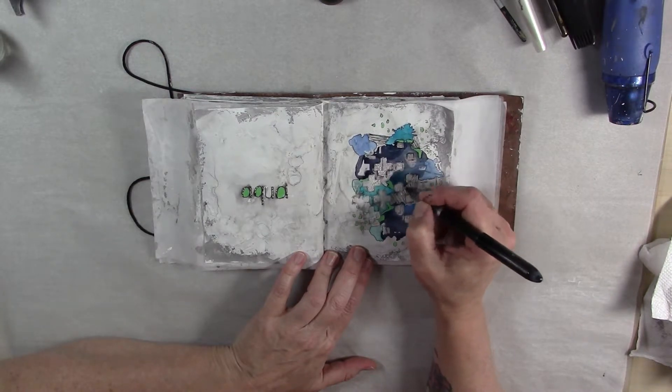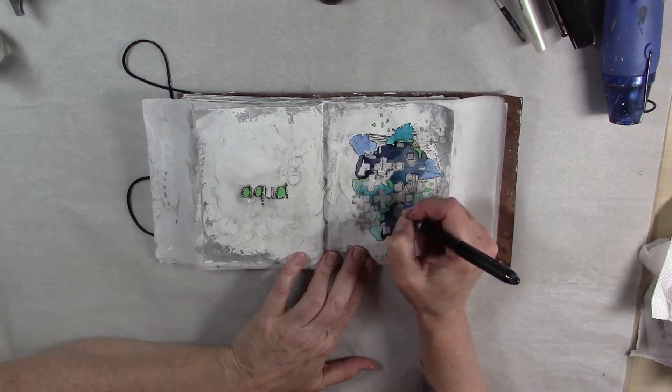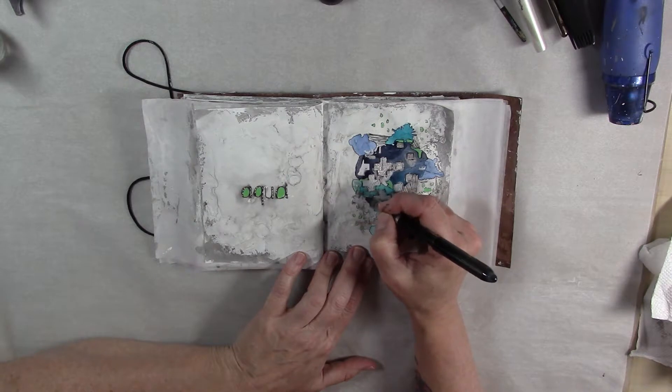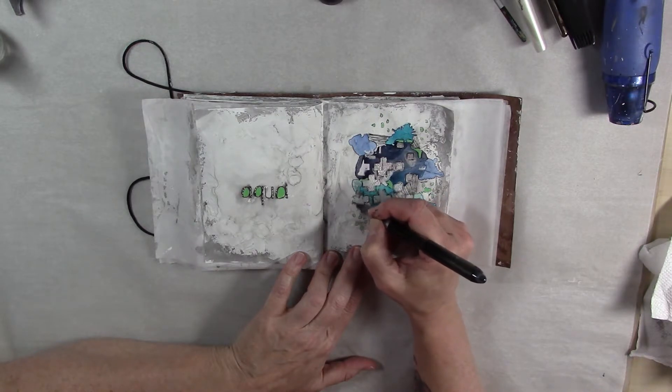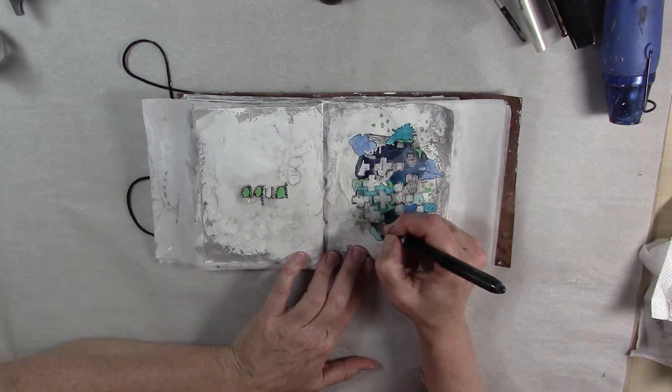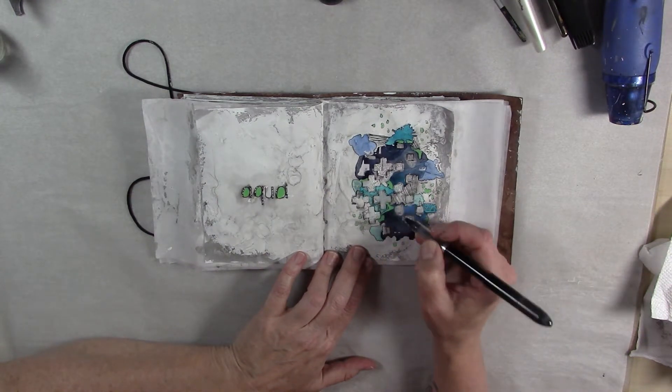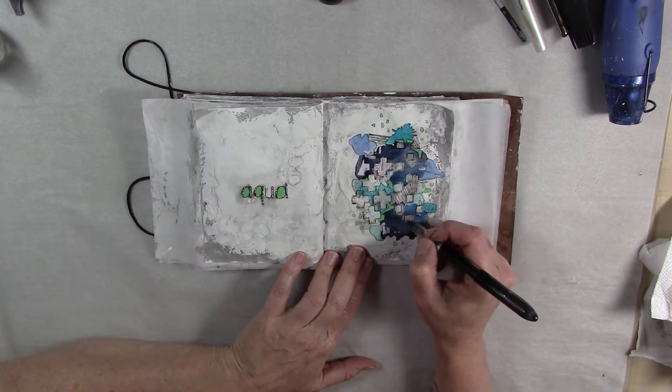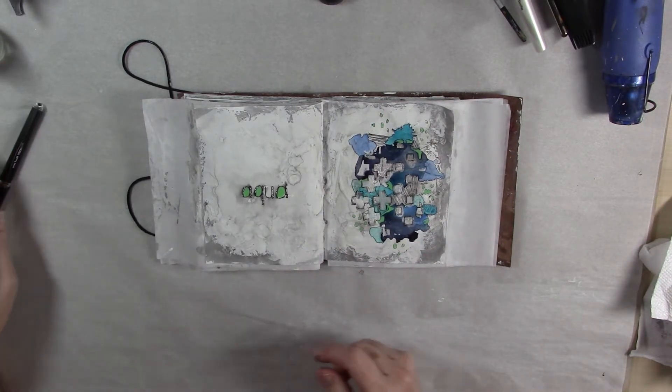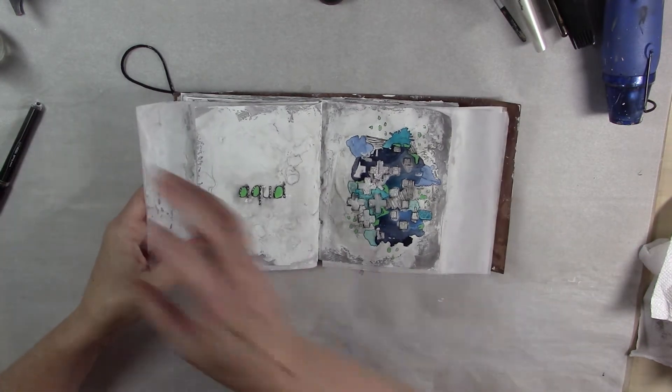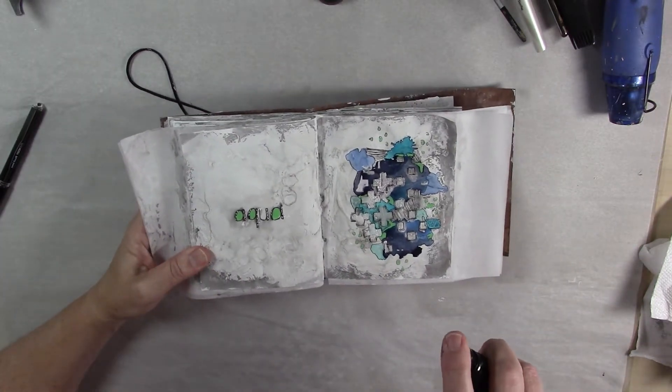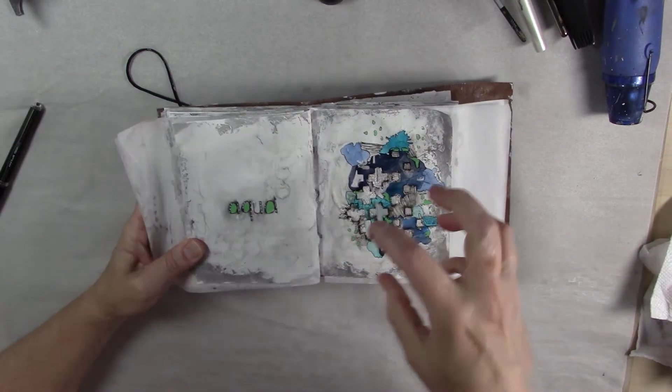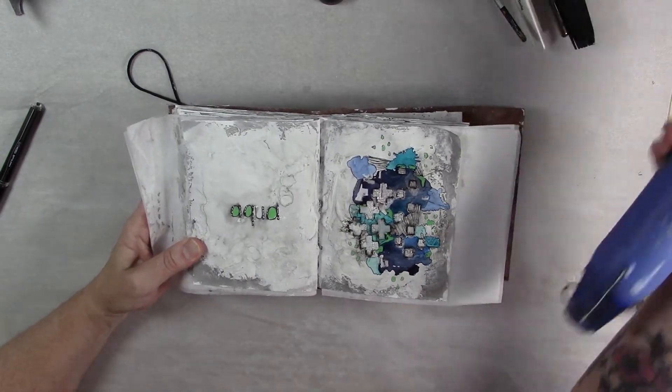And again, just being super loose, super scribbly around each one of these crosses and squares. And then I'm going to mist again, but this time I'm only going to mist it once because I want to retain some of that darkness of the pen. And again, I'm going to dry it.